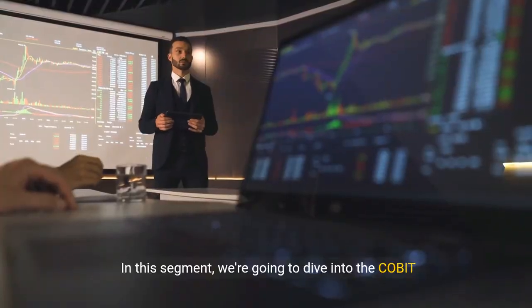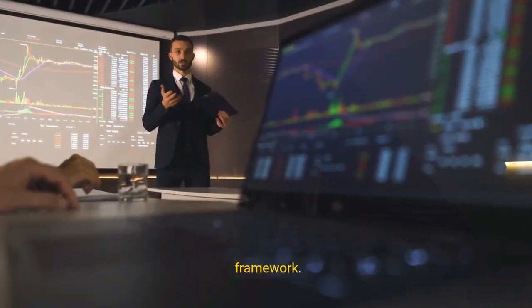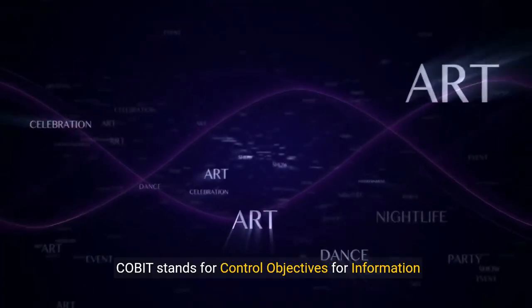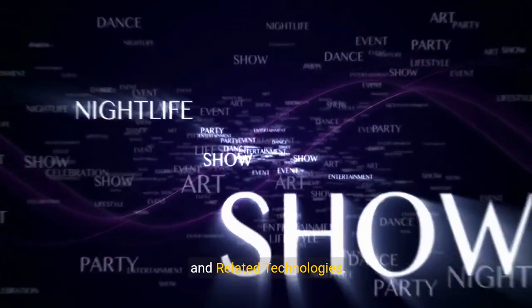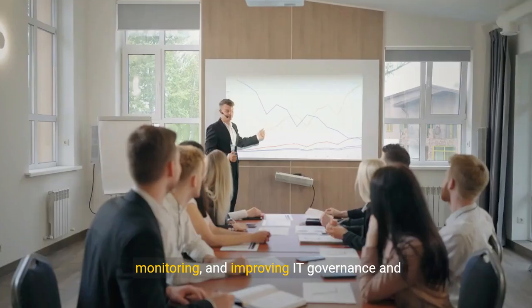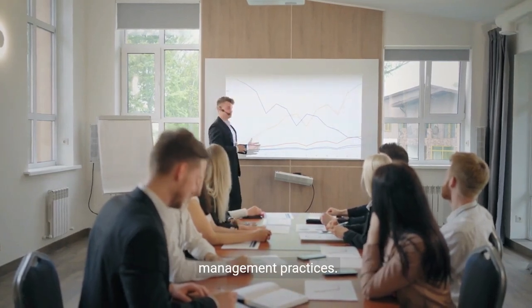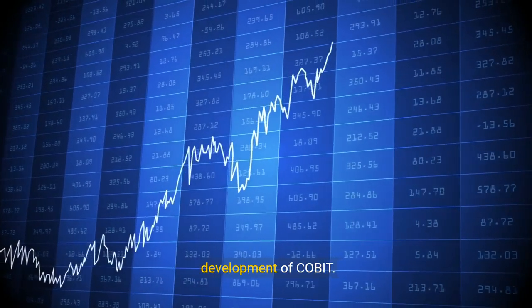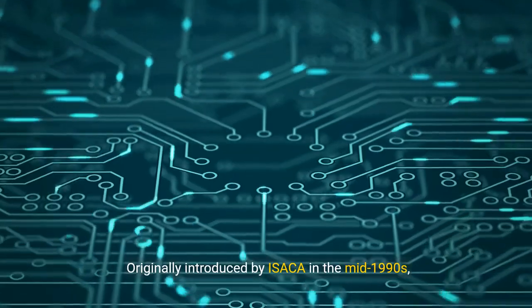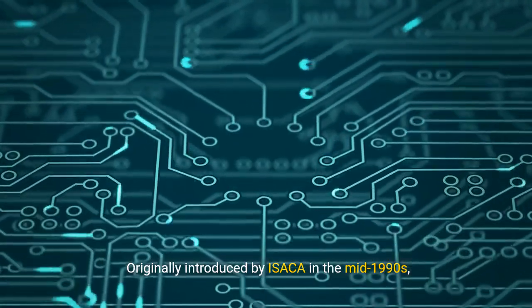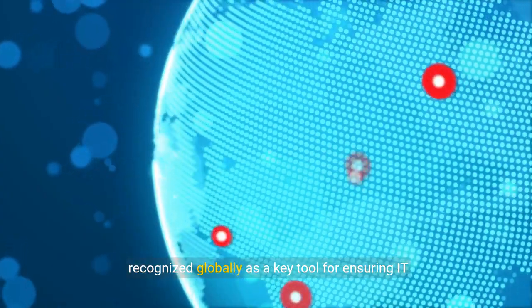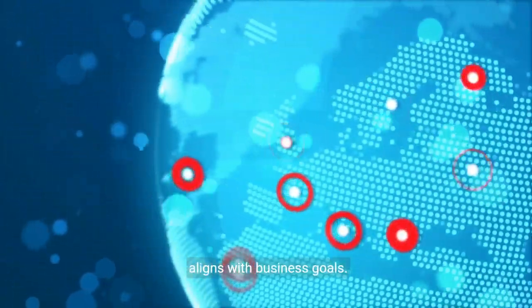In this segment, we're going to dive into the COBIT framework. But what exactly is COBIT? COBIT stands for Control Objectives for Information and Related Technologies. It's a comprehensive framework for developing, implementing, monitoring, and improving IT governance and management practices. First, let's take a brief look at the history and development of COBIT. Originally introduced by ISACA in the mid-1990s, COBIT has evolved significantly and is now recognized globally as a key tool for ensuring IT aligns with business goals.